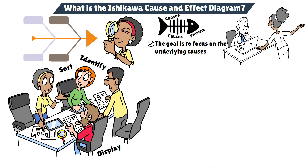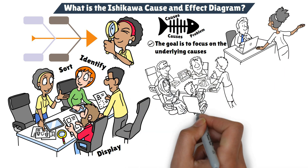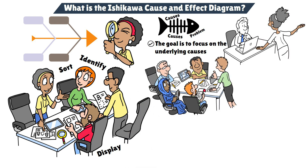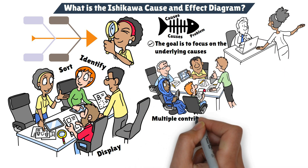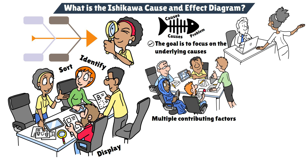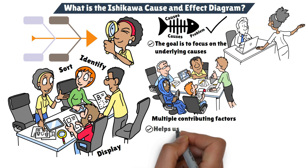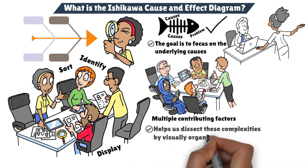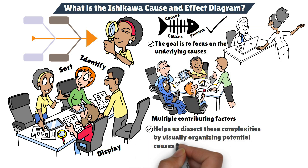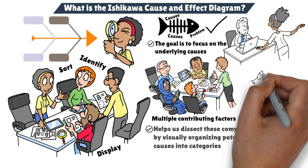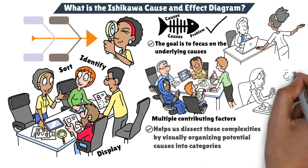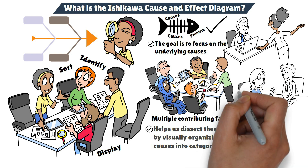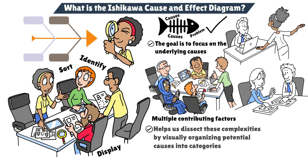In project management, we often face complex challenges where there are multiple contributing factors. The fishbone diagram helps us dissect these complexities by visually organizing potential causes into categories. It's a great tool to use in brainstorming sessions, where you can collaborate with your team to identify all possible causes of a problem.